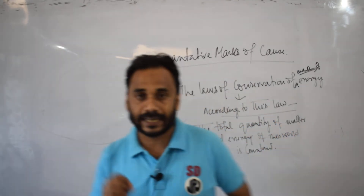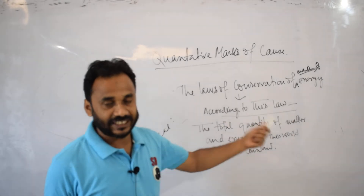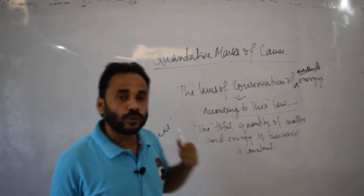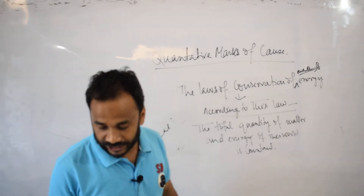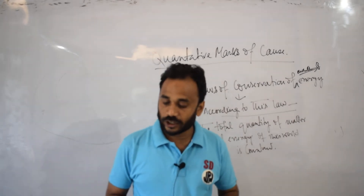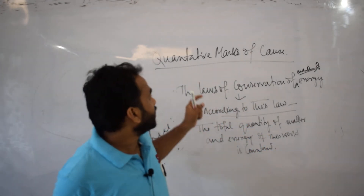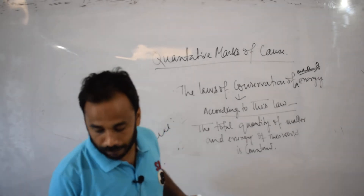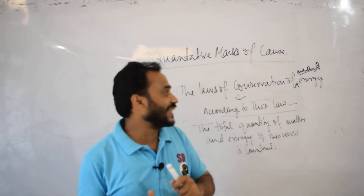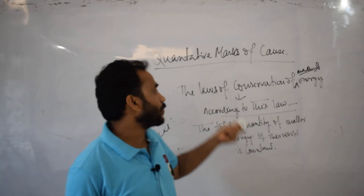According to the laws of conservation of matter and energy, the important quantitative mark is that quantitatively the cause is equal to the effect. It means that as regards quantity, the matter and the energy in the cause are equal to those in the effect, and this characteristic follows from the laws of conservation of matter and energy.